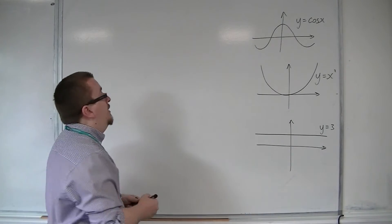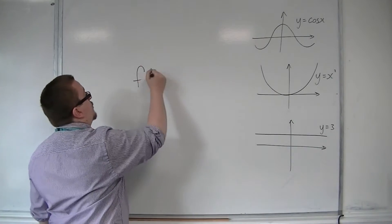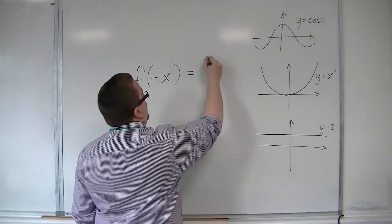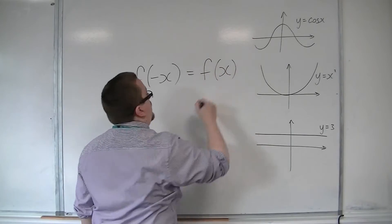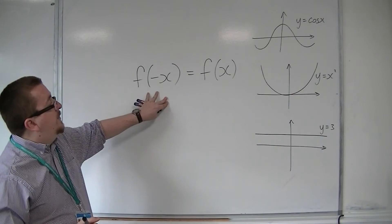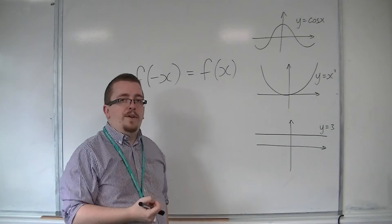Subsequently, because of this, for even functions, if you substitute x for minus x, you should end up with exactly the same function. So, f of minus x is the same as f of x.